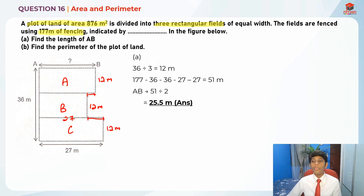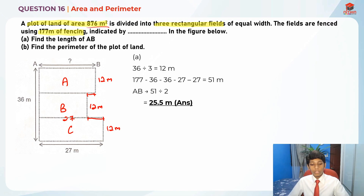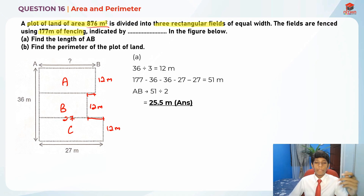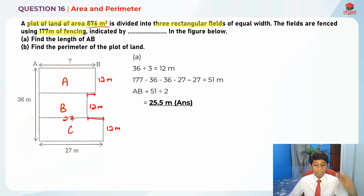In order to find those lengths, we need to find the area of rectangle B. Since the total area of the plot of land is 876 square meters, we can take 876 minus the areas of A and C to get the area of B, then divide by 12 to get the length of B. From there we can compute 27 minus the length of B, and 25.5 minus the length of B.